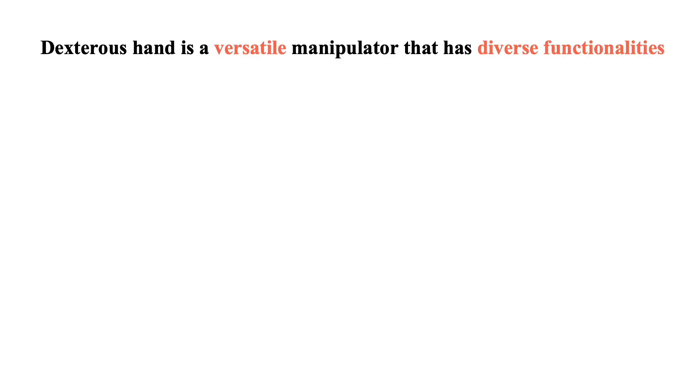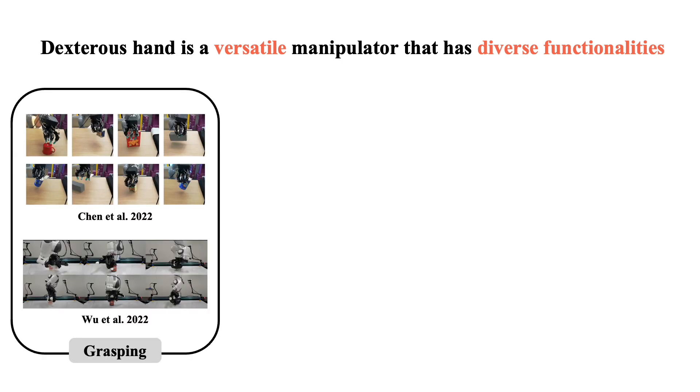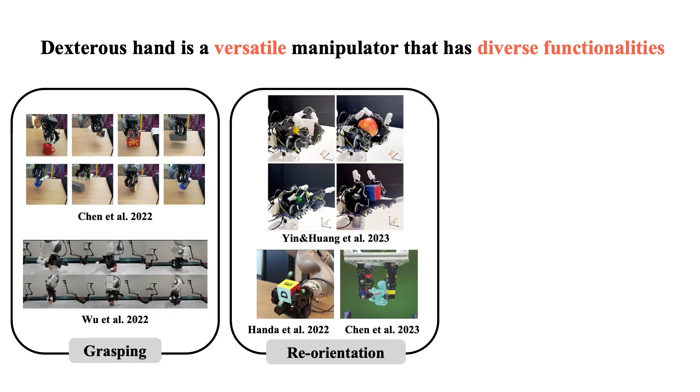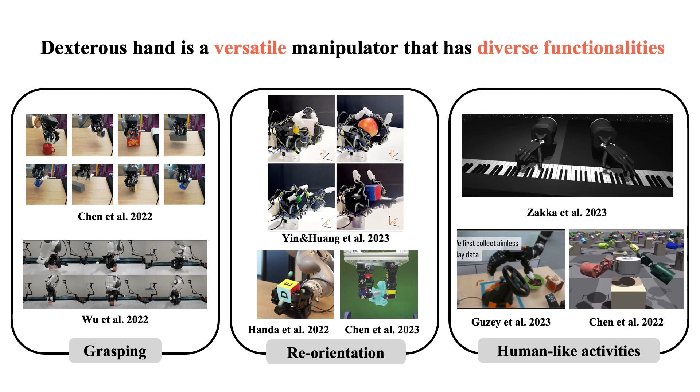Prior works in dexterous manipulation showcase that the hand can be a versatile manipulator with diverse functionalities. These range from basic object grasping, in-hand reorientation, to more intricate human-like activity such as playing piano.